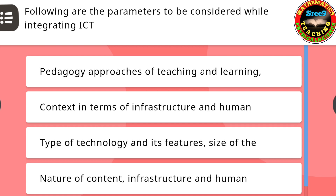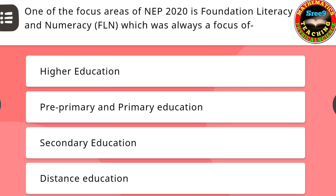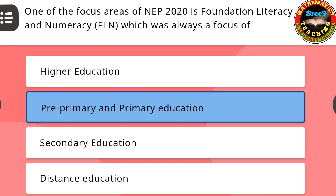The next question: Following are the parameters to be considered while integrating ICT. The correct answer is: nature of content, infrastructure, and human. The next question: One of the focus areas of NEP 2020 is foundation literacy and numeracy (FLN), which was always a focus of — the correct answer is: pre-primary and primary education.